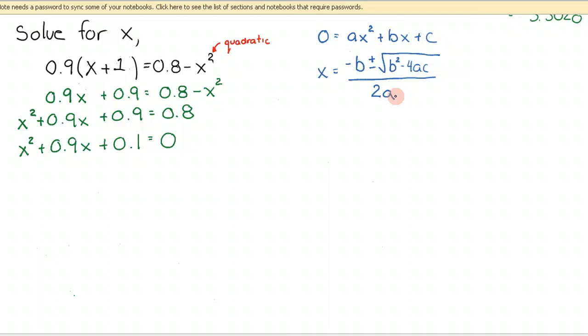And now I go back and pick up my a term. So my a term is 1, my b term is 0.9, and my c term is 1. So therefore, x is equal to negative 0.9 plus or minus the square root of 0.9 squared minus 4... There's a little mistake here. c is 0.1.